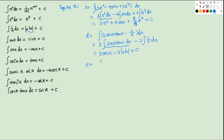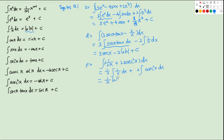Now let's look at question F: the integral of 1/(2x) + 2cosec²x dx. We take out the factor of 1/2 for the first term, giving 1/2 · ln|x|. And for the cosec²x term we take out the 2, giving minus 2cotx. So the result is (1/2)ln|x| − 2cotx + C.